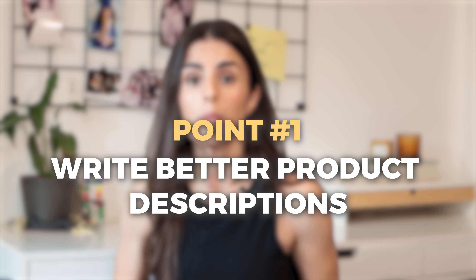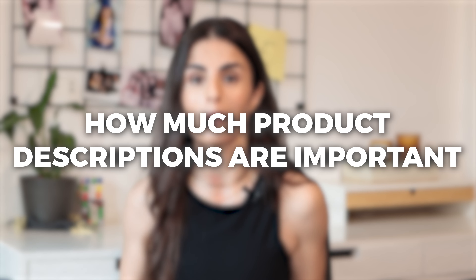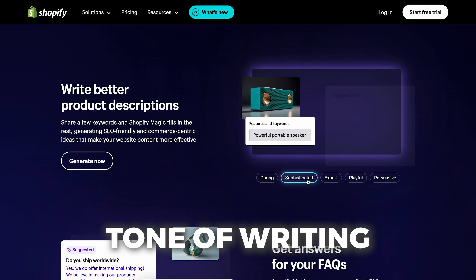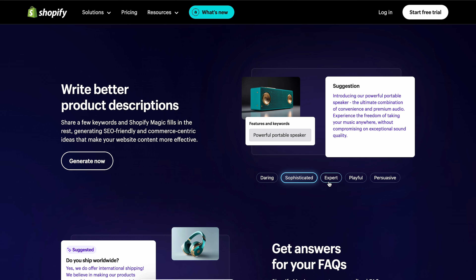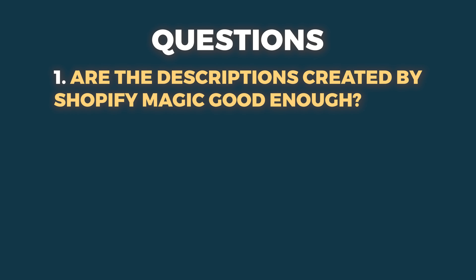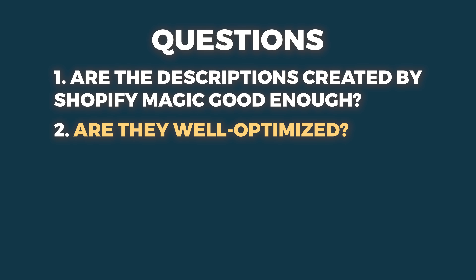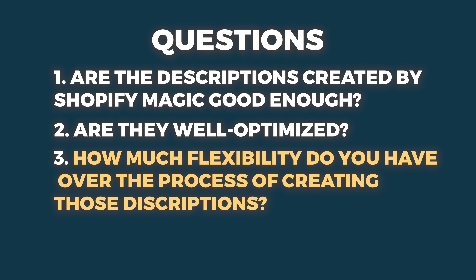The first thing Shopify Magic can help you with is writing better product descriptions. We all know how important product descriptions are. Now you can get them done in a few seconds — just provide relevant keywords, the tone of writing, and some special instructions. The questions are: are the descriptions good enough, are they well optimized, and how much flexibility do you have? Let's find out by trying Shopify Magic directly.